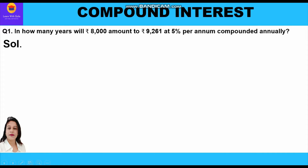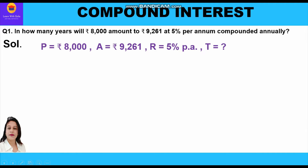First, let us write what is given to us. P, the principal, is rupees 8000. A, the amount, is rupees 9261. Rate of interest r is 5% per annum, and t is the time period which we have to find. We shall use the formula A = P(1 + r/100)^n and now put the values.